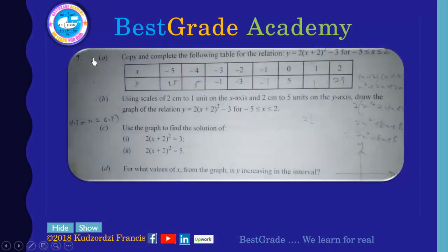So we have this question seven: copy and complete the following table for the relation y equals 2 into bracket x plus 2 all squared minus 3, for the interval negative 5 is less than or equal to x is less than or equal to 2.